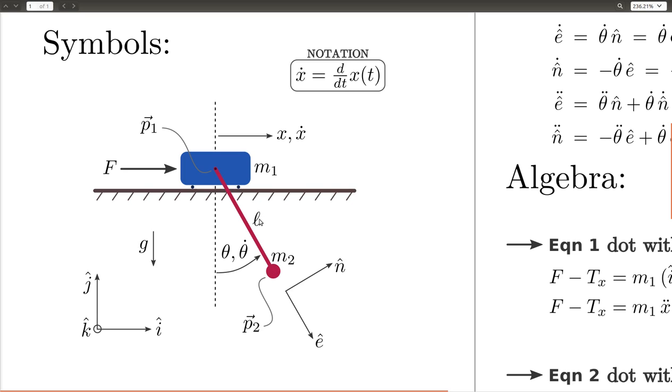The pole is of length L, and the motor applies some horizontal force, capital F. The cart can move horizontally, and that motion is described by the state vector x and x dot, where x is the position of the cart, and x dot is the velocity of the cart, where the dot just means derivative with respect to time.